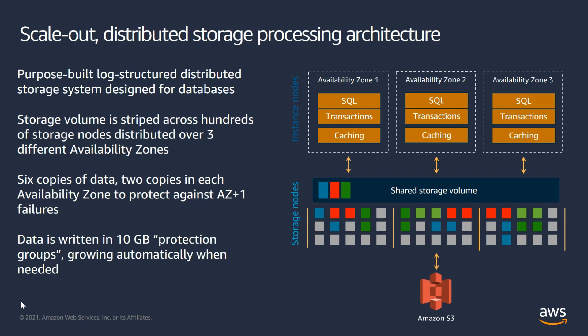As part of the distributed storage, we maintain six copies of your data — two copies in each availability zone — and the data is continuously backed up to Amazon S3. The storage volume is segmented into 10 GB protection groups and the database grows by adding more of these protection groups. With Amazon Aurora, storage scales automatically with a maximum size up to 128 TB per database instance. Aurora storage is also self-healing, meaning data blocks on disks are continuously scanned for errors and repaired automatically.